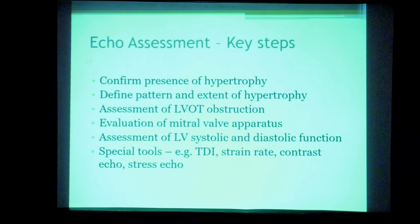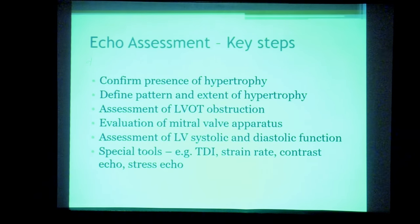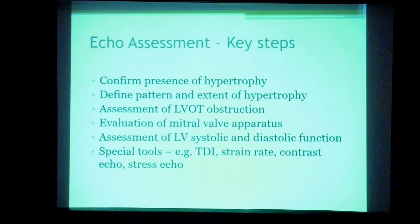The key steps in echo assessment of HCM are: first, confirm the presence of hypertrophy; second, define the pattern and extent of hypertrophy; third, assess whether there is LVOT obstruction; fourth, evaluate the mitral valve apparatus; fifth, assess LV systolic and diastolic function; and finally, a few special considerations to be covered later.